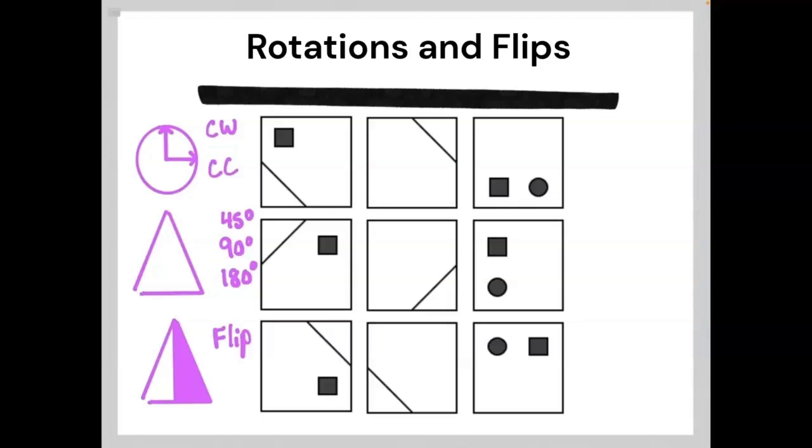If you were to look at the face of a clock, clockwise is following the natural movement of the hands on the clock, to the right, down, and around. So if a shape in a matrix is rotating in that same pattern, it is rotating clockwise.